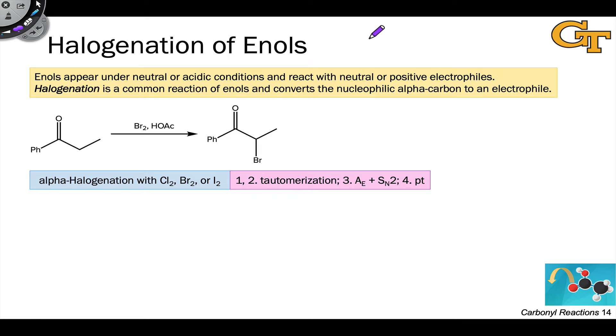The first electrophile we're going to consider in reactions of enols and enolates is the elemental halogen, X2, where X is either bromine, chlorine, or iodine.